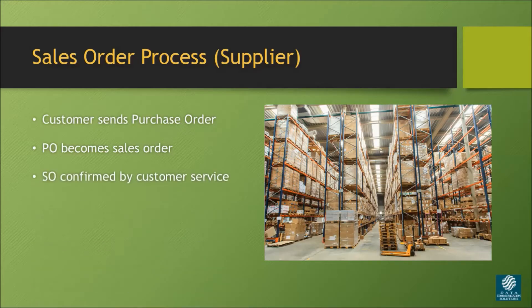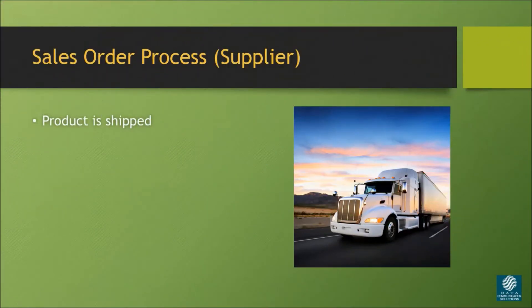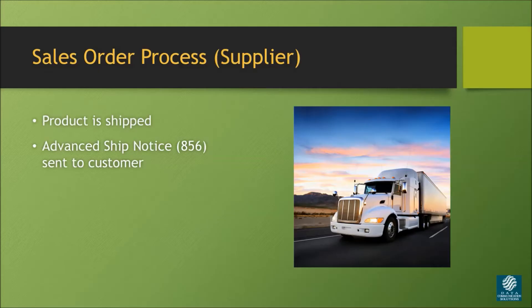After the sales order goes through communications, EDI mapping, and is imported into the ERP system, the order is then confirmed by someone in customer service. Once confirmed, the sales order triggers a firm order within the ERP and produces the various processes within the warehouse module to create the product that was ordered by the customer. The warehouse team then assembles the product. Once assembled and shipped, the ERP triggers a shipment notice, also known as an advanced ship notice, or 856, to be sent to the customer.